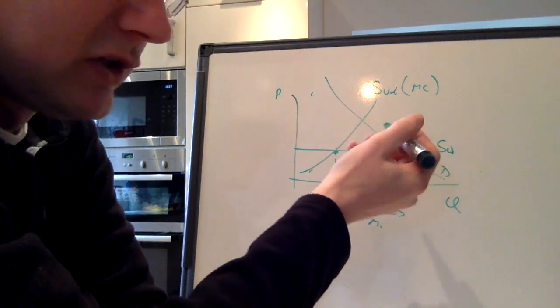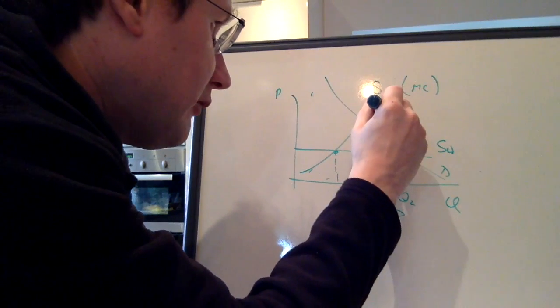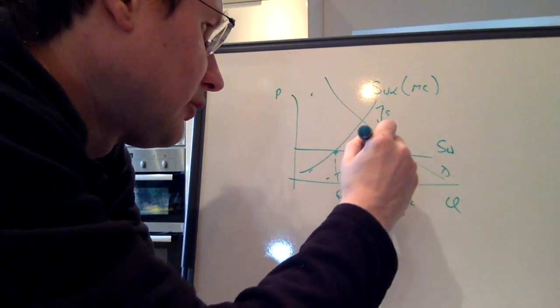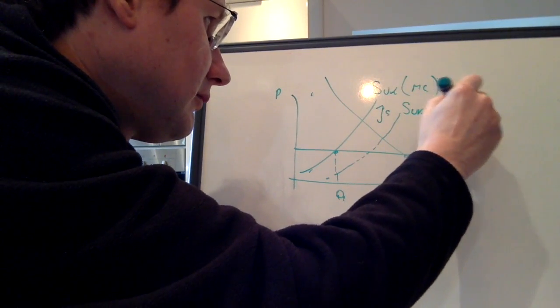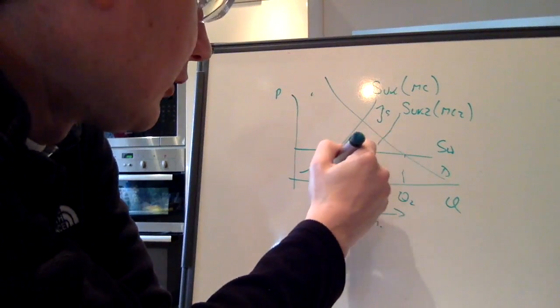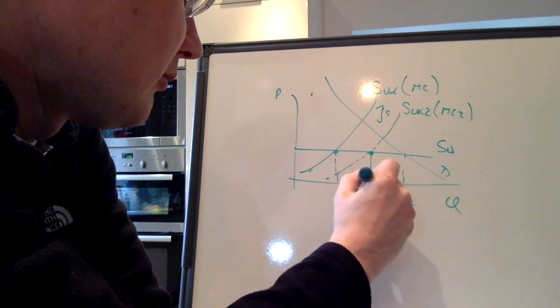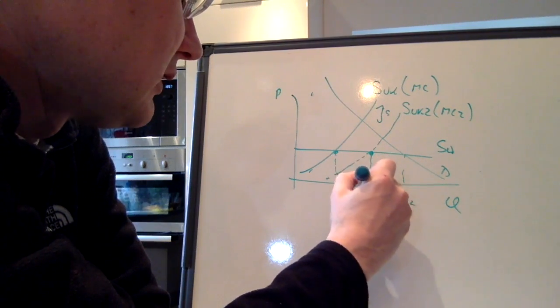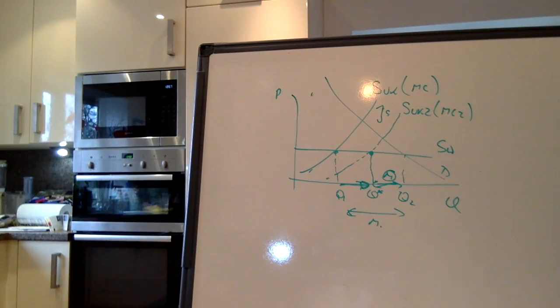What a subsidy does effectively is reduce the marginal cost of domestic firms. So if we give a subsidy of S, then marginal costs fall by the amount of the subsidy. Now there are more firms whose marginal costs are below the world price, so effectively the UK market share increases to Q-star, and imports are now only at that lower level. Something like that, I think, is quite smart. There is a diagram for quotas, though whether it's worth the trouble I'm not entirely sure.